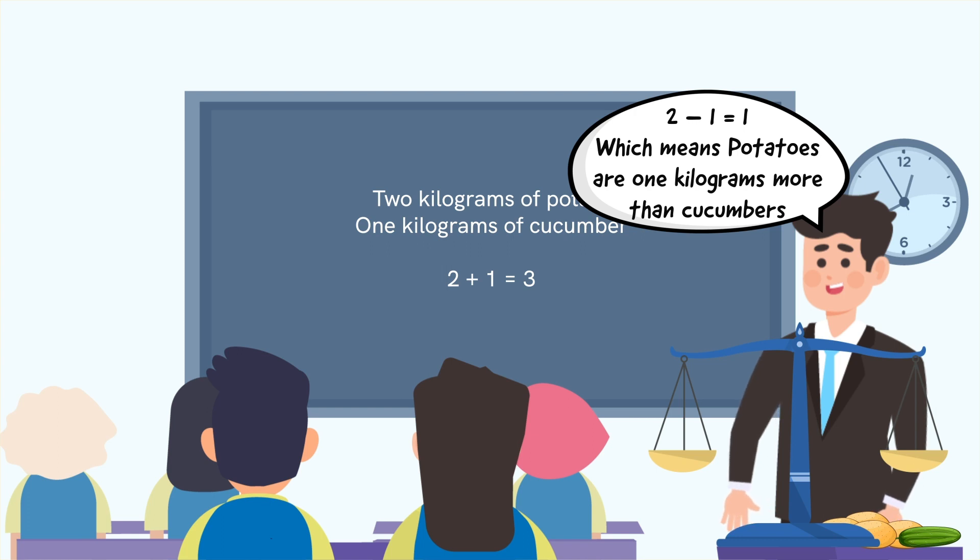Announce how much more weight the potatoes are than the cucumbers and mention that 2 - 1 = 1, which means potatoes are one kilogram more than the cucumbers.